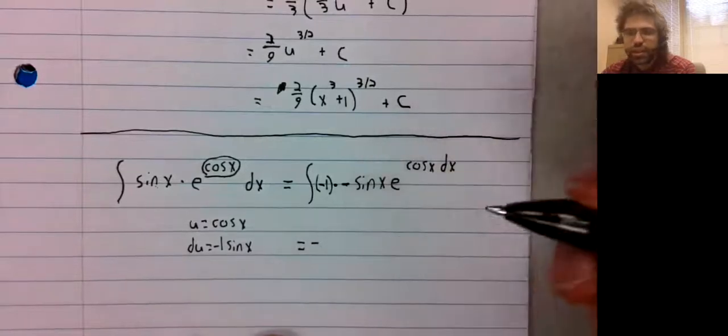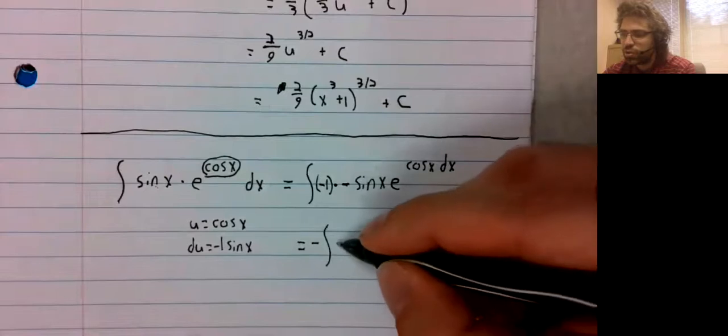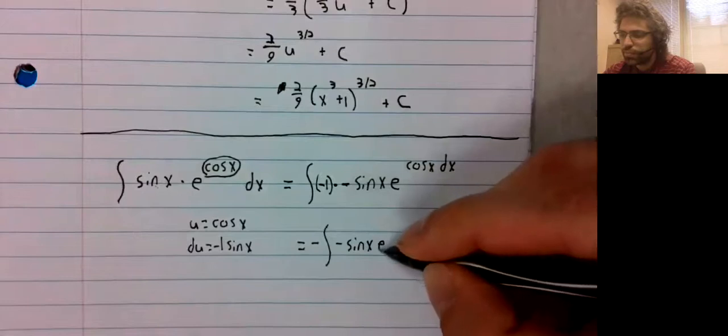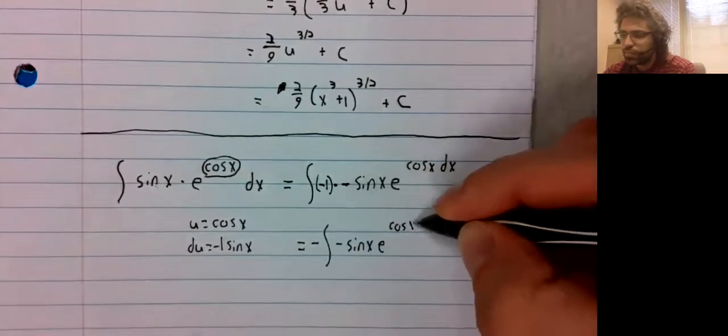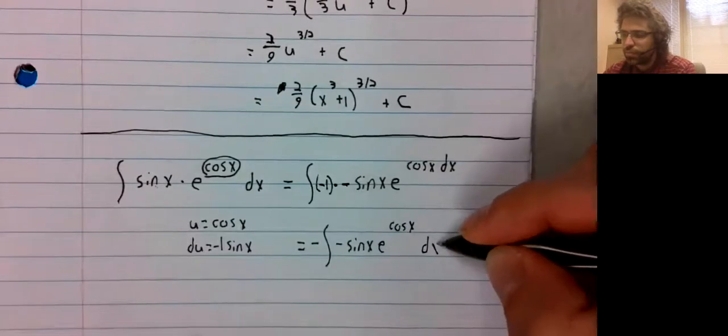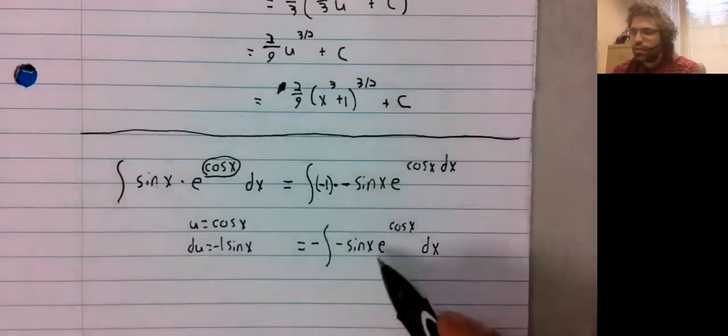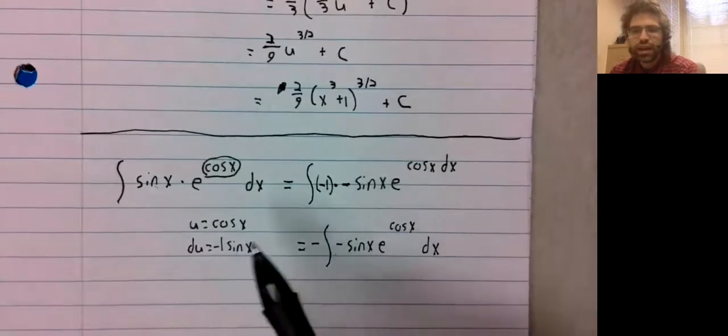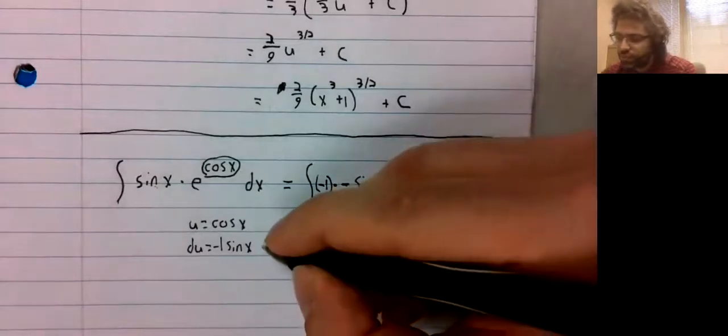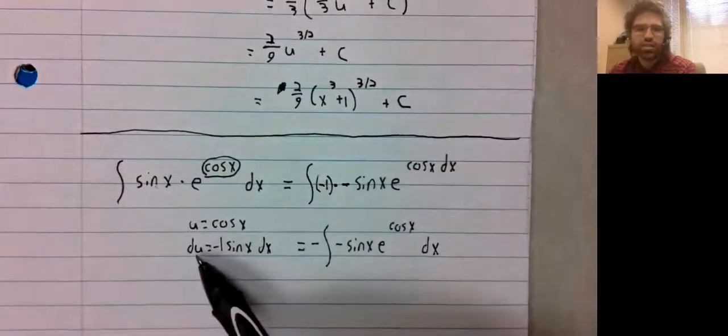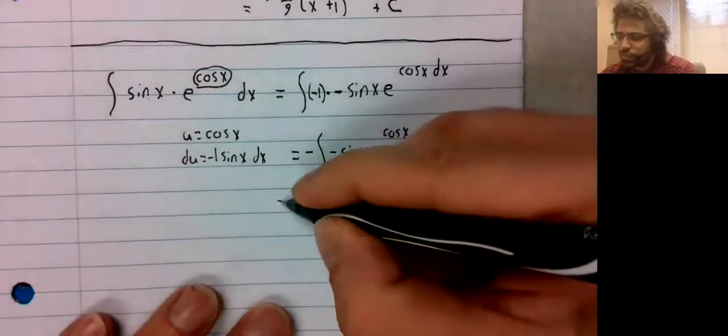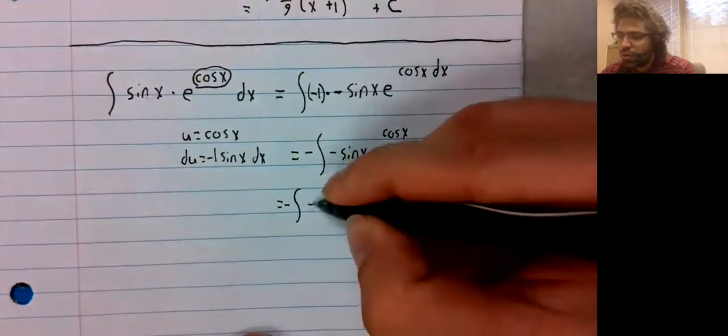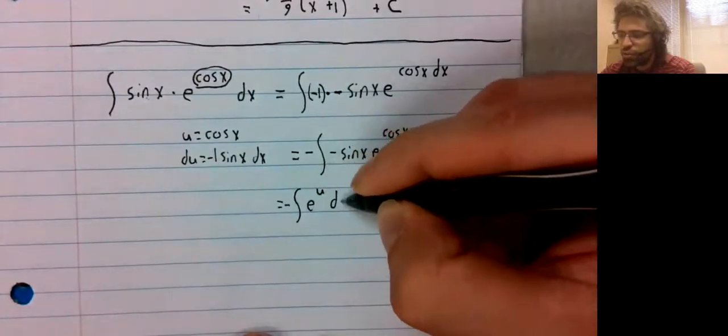That negative one comes out. And this is e to the u. The negative sine of x dx gives us du. So this is negative the integral of e to the u du.